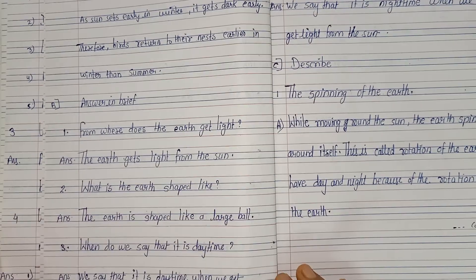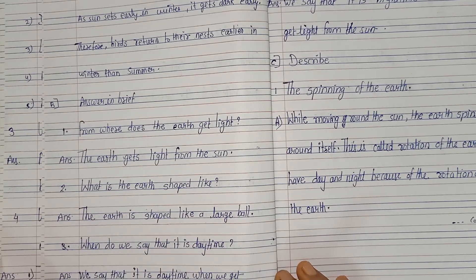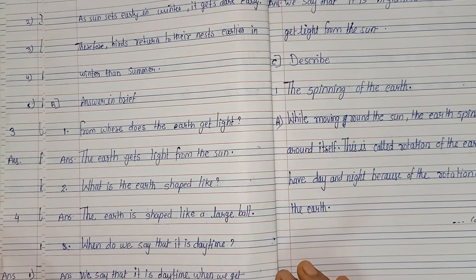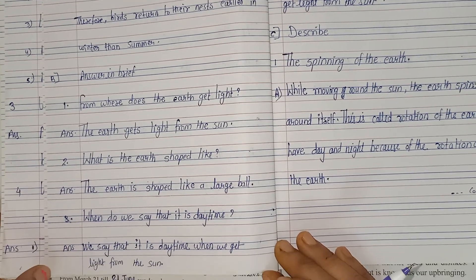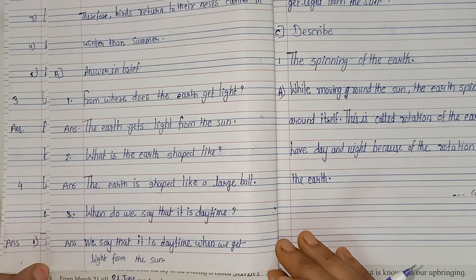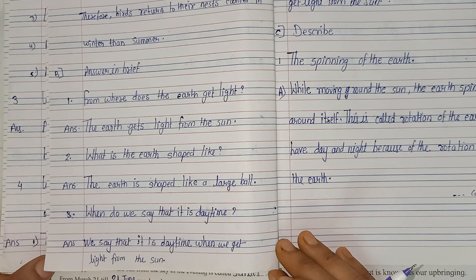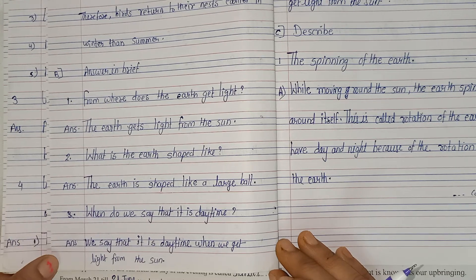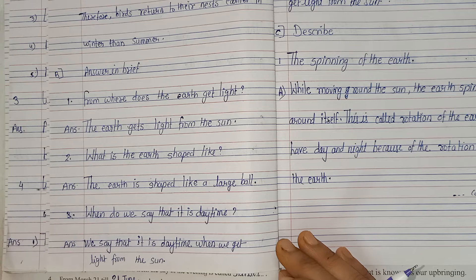Question B, write in brief. Question No. 1: from where does the earth get light? Answer: the earth gets light from the sun. Question No. 2: what is the earth shaped like? Answer: the earth is shaped like a large ball.